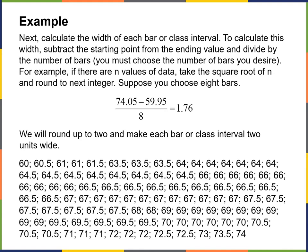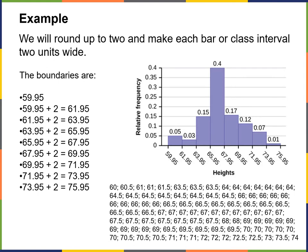1.76 for the width is pretty close to 2, so we're going to round up to 2 and make each bar or class interval two units wide. This just makes our histogram easily readable by using two-inch intervals in this case.